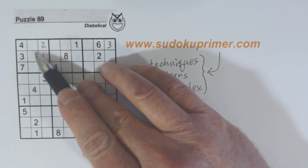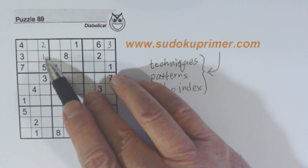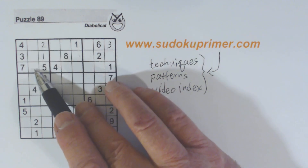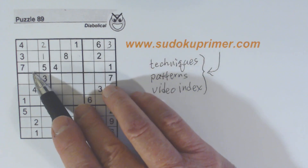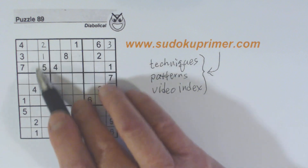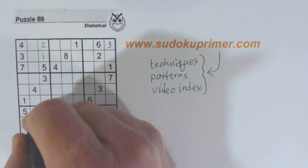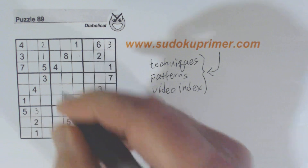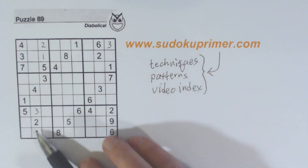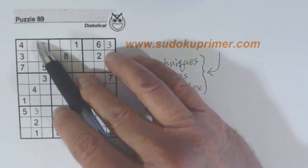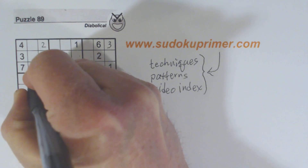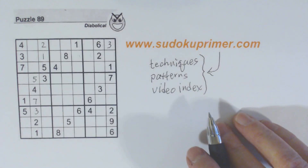Now here in box one we've filled in a one and a two, so we've got six, eight, and nine missing. We can't solve those right now, but notice we can put a three here because we've got a three and a three there already. So what are we missing? That's a five and a seven, and we can fill those in.